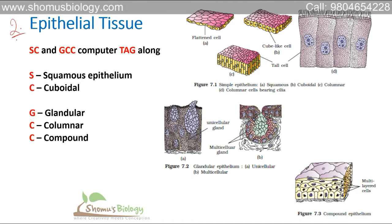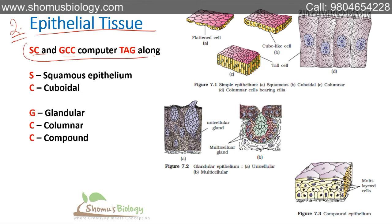The second topic is epithelial tissue. There are many different types of epithelial tissue, which makes it really hard to remember. That's why we use a very simple mnemonic sentence: 'SC and GCC computers tag along.' Think of two computer companies — SC computers and GCC computers — that tag together and become one big company. If you remember this sentence, you remember the types of epithelial tissue.